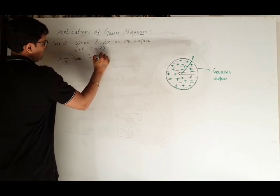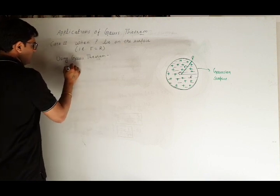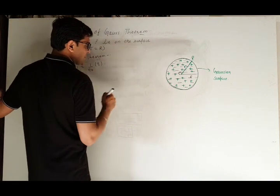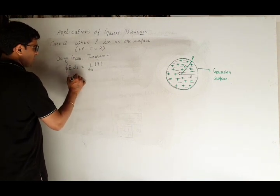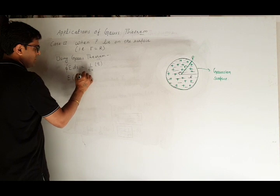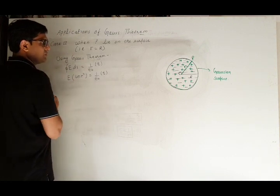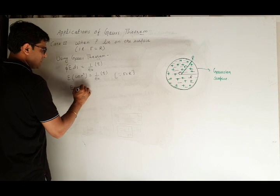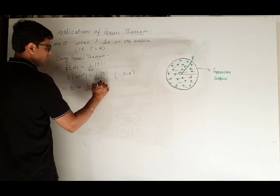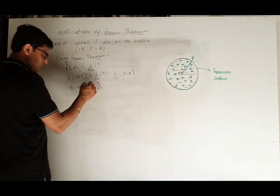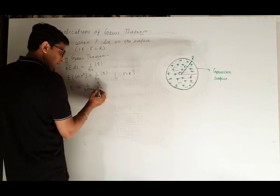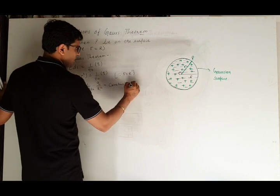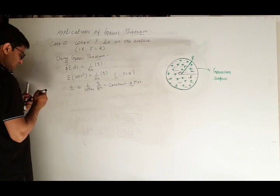Using Gauss theorem, E dot ds equals 1 by epsilon-naught into Q, because the total charge Q is still within this radius. So E into 4πr² equals 1 by epsilon-naught into Q, giving E equals Q divided by 4π epsilon-naught r². Since Q and R are both constant, E is constant and at a maximum value at the surface. This was Case 2.